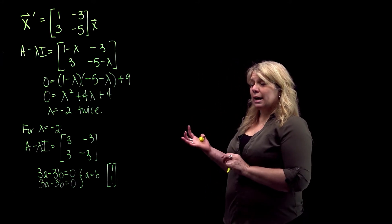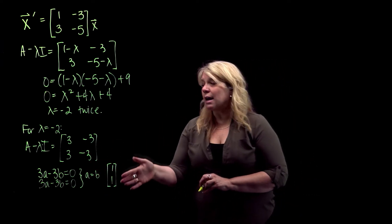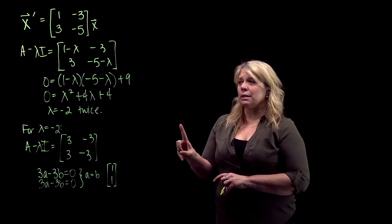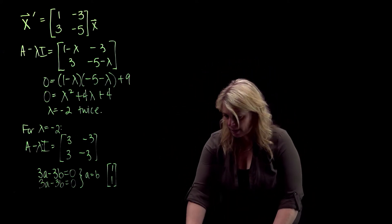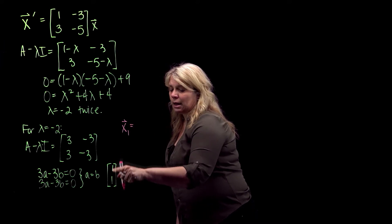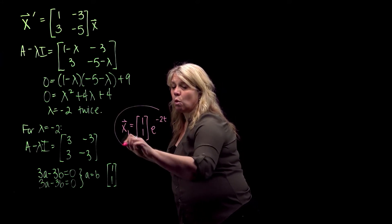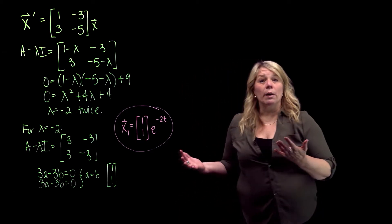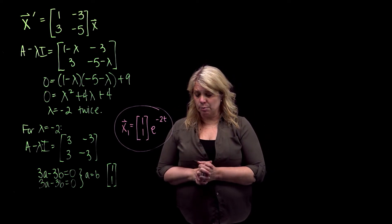For example, I could use the eigenvector [1, 1]. When we had distinct real eigenvalues, we'd just do that, write down the other one, and essentially write our answer. This does give us one solution to the system of differential equations — [1, 1] times e to the negative 2t — but the problem is it gives us only one solution, and I really need two linearly independent solutions. So where do I get the other one?